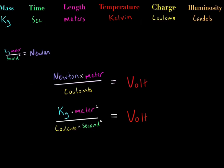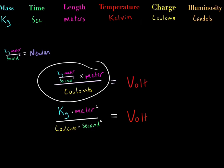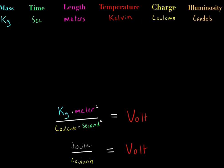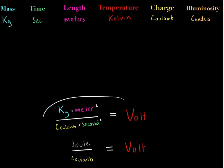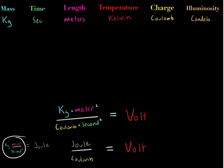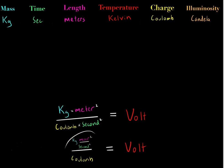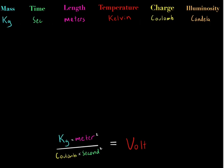They're all right, because newtons is just kilograms times meters over seconds squared. So if you replace newtons with that expression in N·m/C and simplify mathematically, you get the same thing. Similarly, joules expressed in base units can replace J in J/C, and it simplifies to the same result. So these all represent the same thing — physics is consistent.